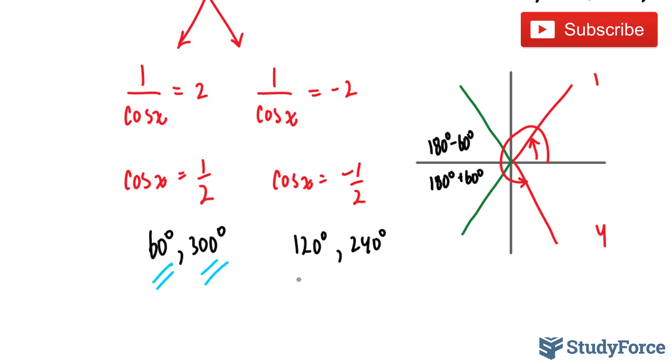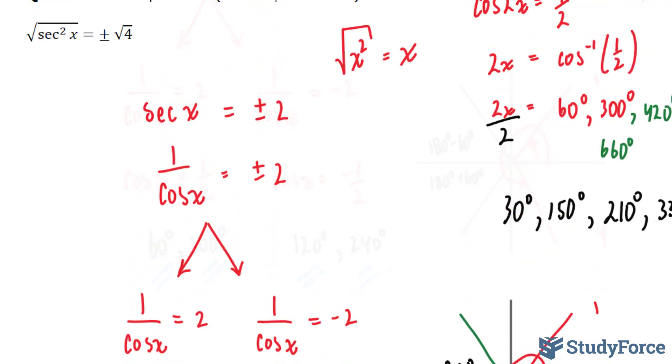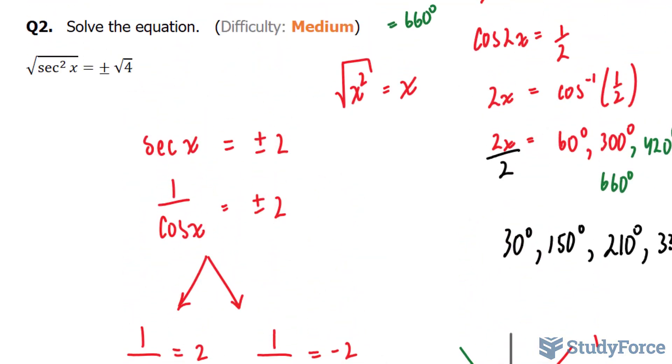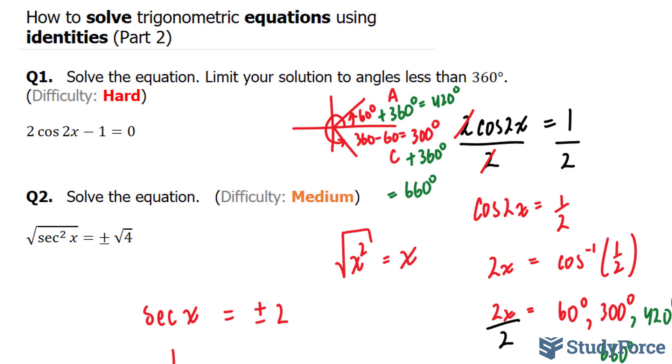These are the four solutions for this equation. And there you have it. That is how to solve trigonometric equations using identities. Make sure to watch part three for more complicated examples.